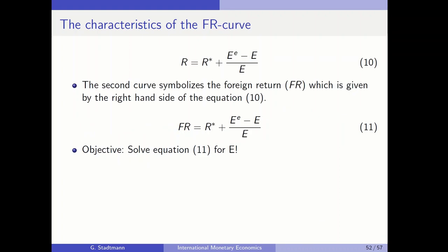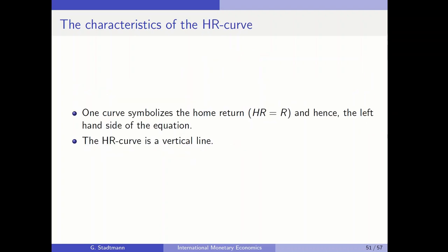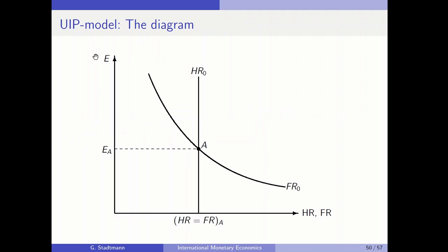The FR curve is a little more complex. The right-hand side of the UIP equation defines the foreign return. In equation 11, the foreign return equals R* plus the expected change in the exchange rate. To compute the slope of this curve, we have to compute DE/DFR — since E is on the vertical axis and FR is on the horizontal axis.